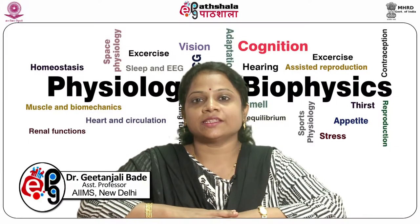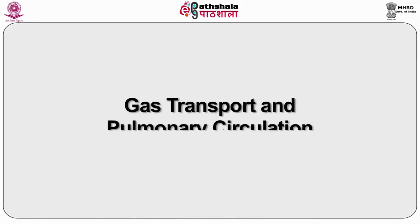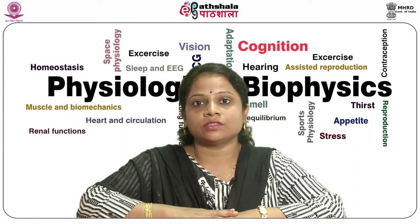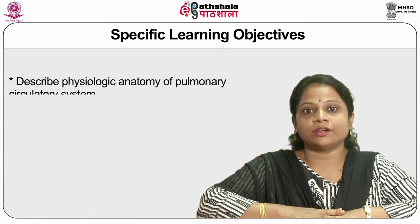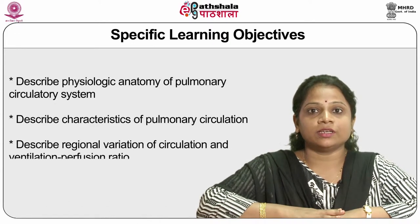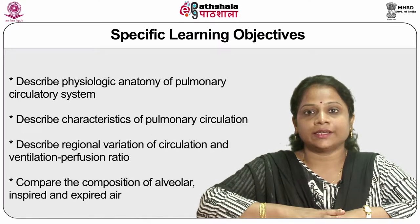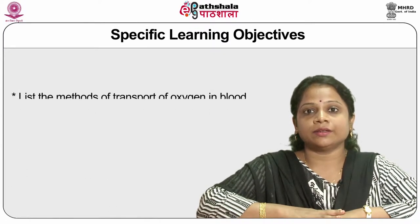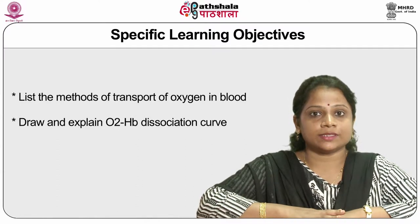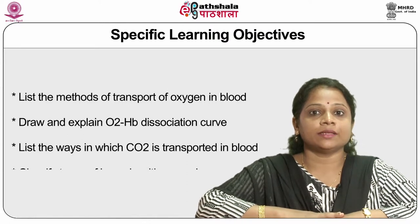I am Dr. Geetan Jalibadai, working as an assistant professor in the department of physiology. This is module number 17: Gas Transport and Pulmonary Circulation. The specific learning objectives for this module are: at the end of this lecture, students should be able to describe the physiologic anatomy of the pulmonary circulatory system, describe characteristics of pulmonary circulation, describe regional variation of circulation and ventilation-perfusion ratio, compare the composition of alveolar air with inspired and expired air, and list the methods of transport of oxygen in blood.